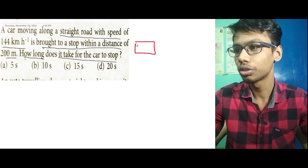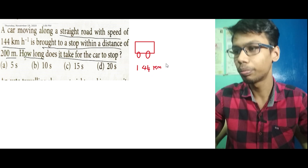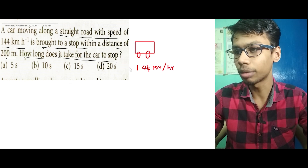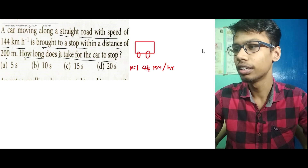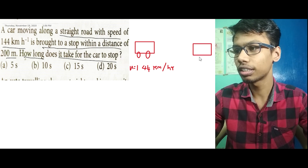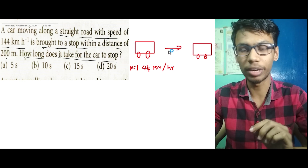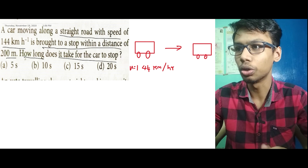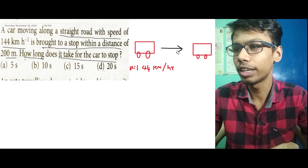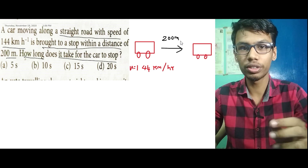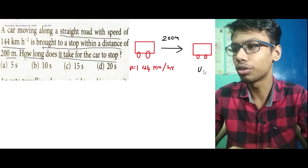This car is moving at a speed of 144 km per hour — that is the initial velocity U. It applies sudden brakes and travels in a straight line, covering a distance S of 200 meters before stopping. Since it stops, the final velocity V is equal to zero.